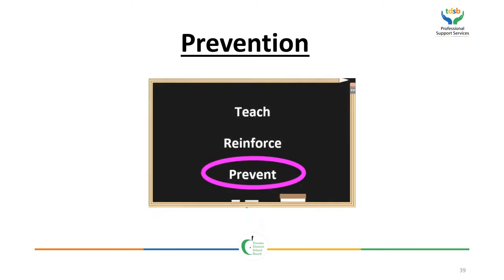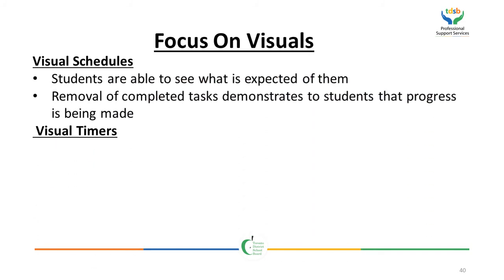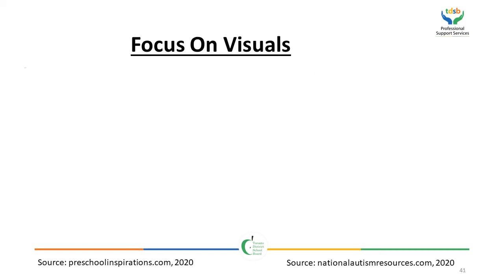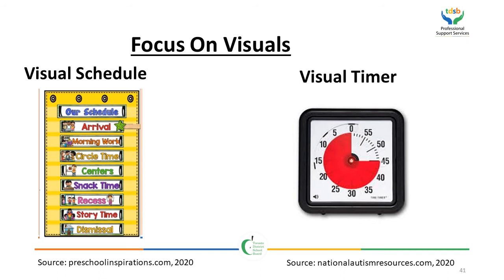Prevention: visuals can be considered a prevention strategy. Visual schedules help students see what is expected of them and allow them to remove completed tasks to see progress being made. A visual timer can help decrease student anxiety or frustration during longer tasks, help students prepare for the termination of a preferred activity, solidify classroom routines, and allow students to act independently. This is an example of a visual schedule and a visual timer.